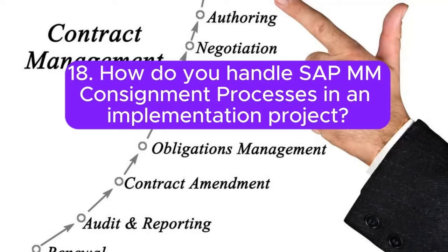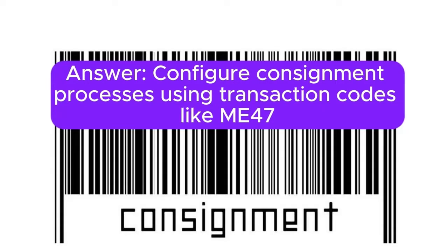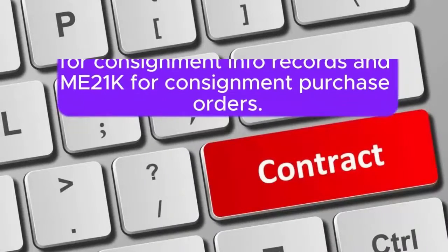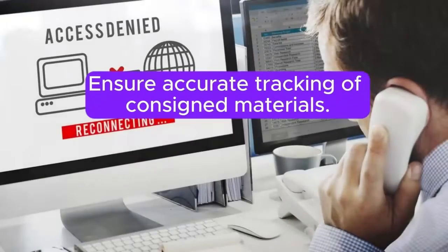Question 18: How do you handle SAP MM consignment processes in an implementation project? Answer: Configure consignment processes using transaction codes like ME47 for consignment info records and ME21K for consignment purchase orders. Ensure accurate tracking of consigned materials.